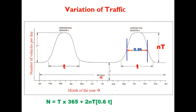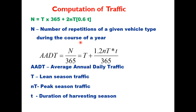The total number of traffic vehicle-days will be T × 365 plus 2nT × 0.6t, where nT is the peak traffic, there are two harvesting seasons, and each lasts 0.6t. From this, AADT = T + (1.2 × n × t × T) / 365, where capital T is the lean season traffic, nT is the peak season traffic, and small t is the duration of harvesting season in days.